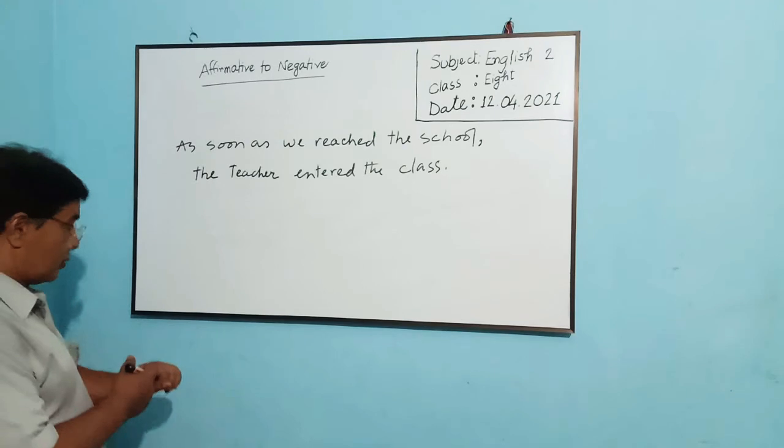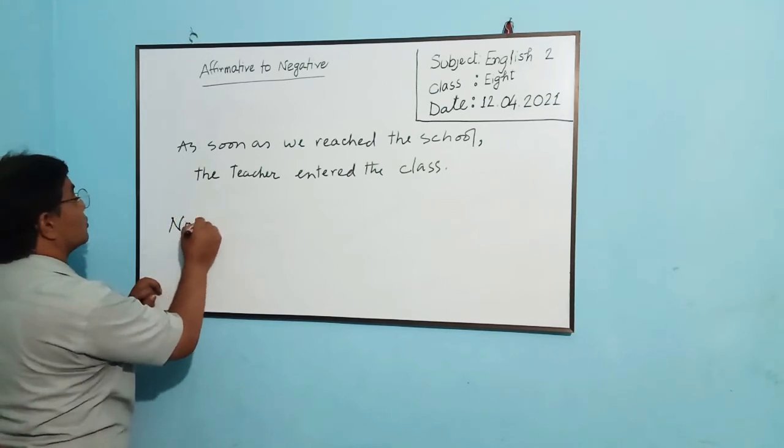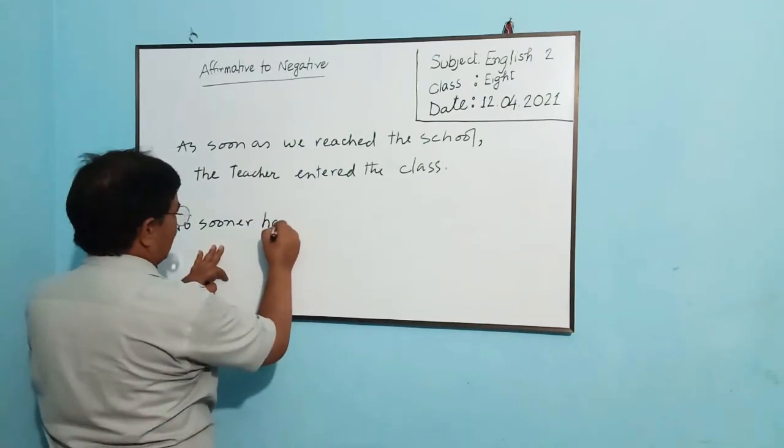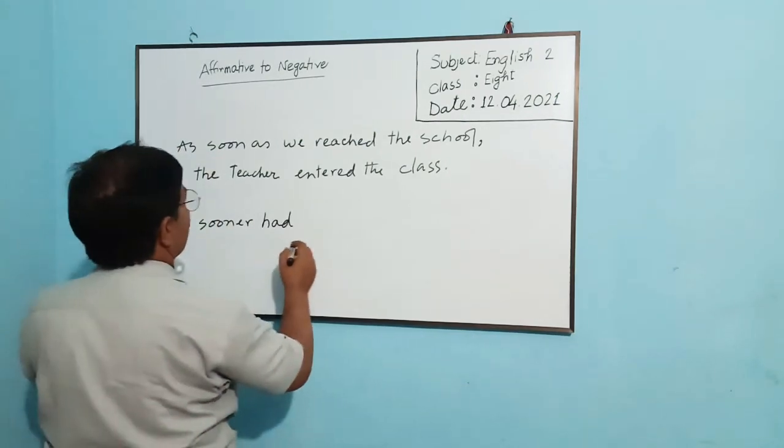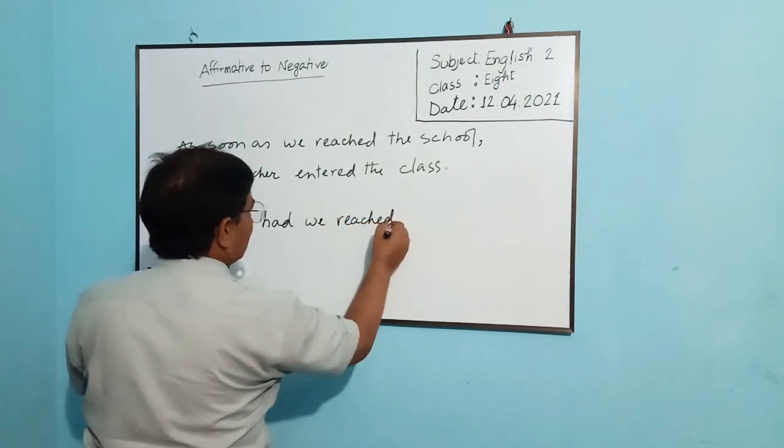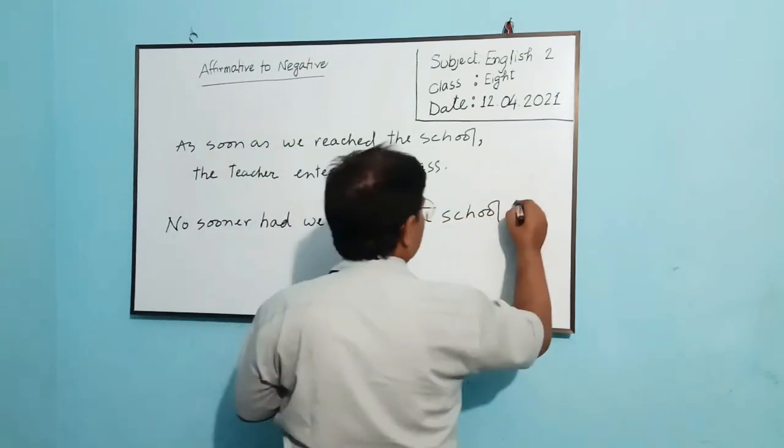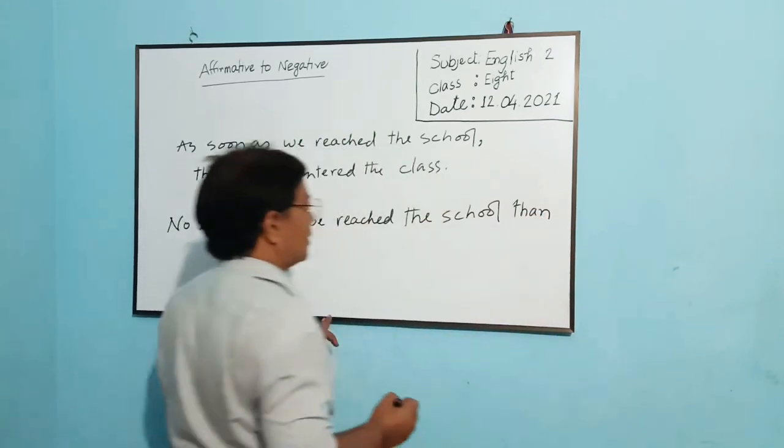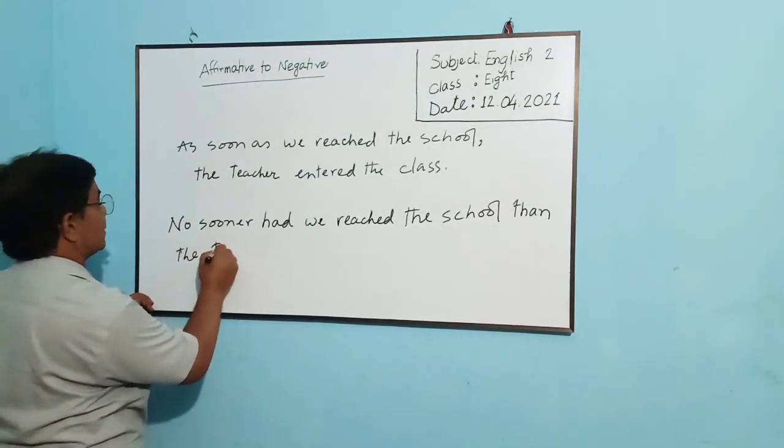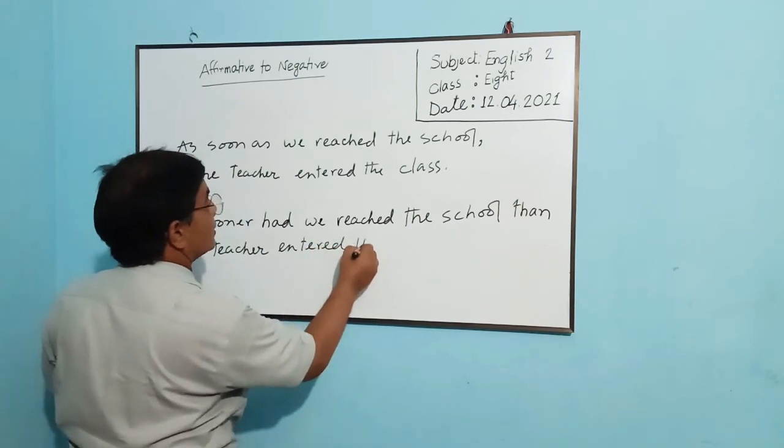The negative form will be: no sooner had we reached the school than—dear student, mind it is than, not them—no sooner had we reached the school than the teacher entered the class.